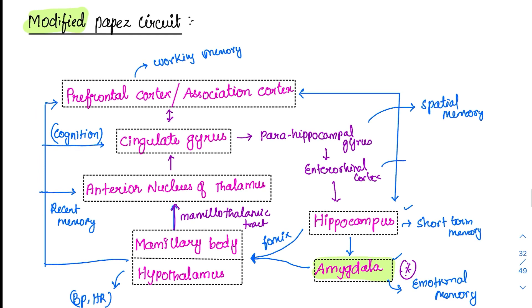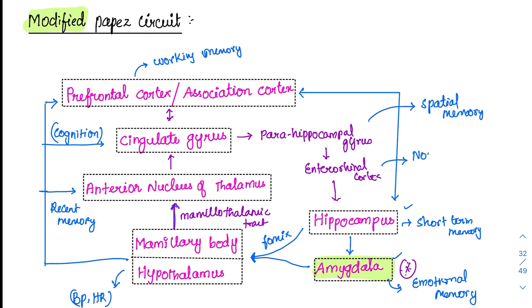Coming to the final part — the entorhinal cortex — it is related to the nose. This is involved in memories of smell, or olfactory memories. That's why whenever some very good food smell comes, we suddenly remember that it looks like our mother or grandmother has cooked. These kinds of olfactory memories and emotional memories are associated with the entorhinal cortex.